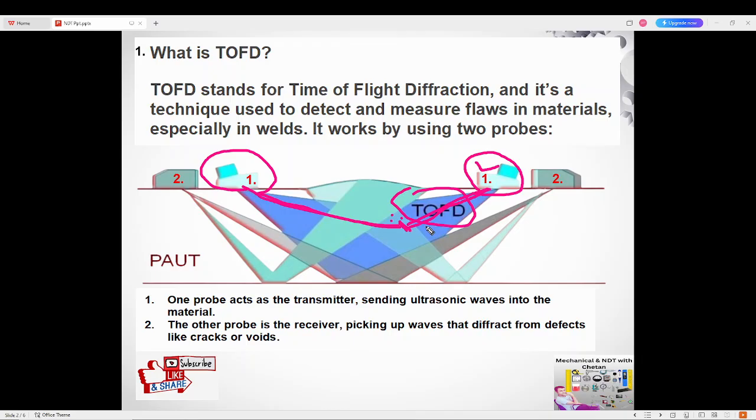TOFD is highly accurate for measuring defect size. If any size is there, TOFD is highly accurate for measuring defect size, even for small cracks. It's often used in industries like pipelines inspection and aerospace testing, and manufacturing industries.